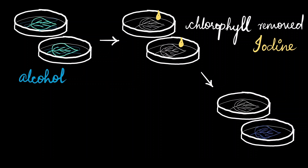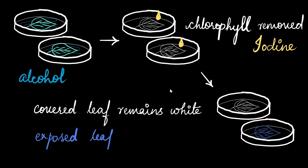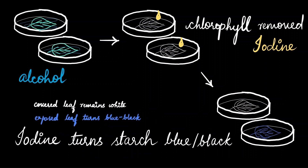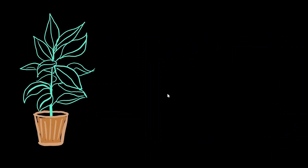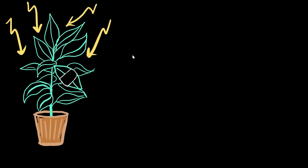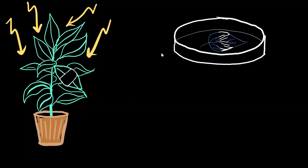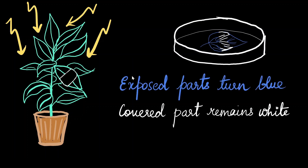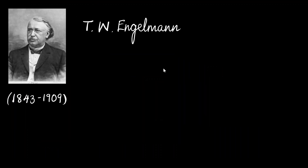Based on what you know about iodine and its reaction with starch from previous chapters, can you guess what happened? The covered leaf remained colorless, whereas the leaf exposed to sunlight turned blue-black — because iodine, when it reacts with starch, gives a bluish-blackish color. He conducted the same experiment again, but this time covered only a portion of the leaf with black paper. He noticed that the parts of the leaf exposed to sunlight turned blue, whereas the covered part remained colorless.